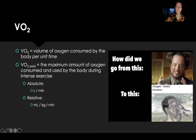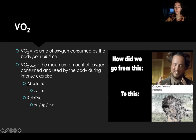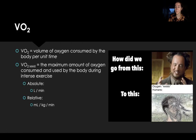VO2 is your oxygen consumption — the amount of oxygen consumed by the body per unit of time. Units can be liters per minute (absolute) or milliliters per kilogram per minute (relative). Absolute VO2 can only be compared to yourself, while relative VO2 allows you to compare to other people, which is a key benefit of the relative measure.